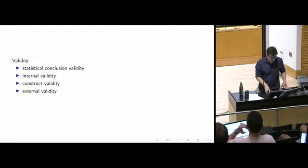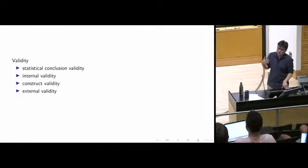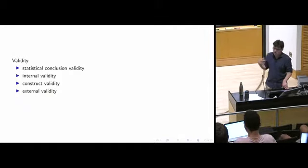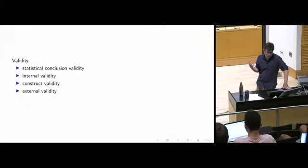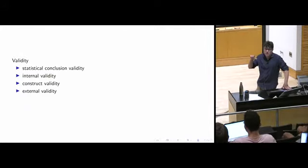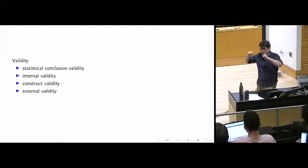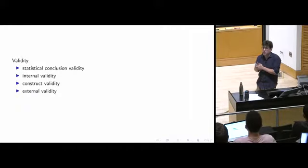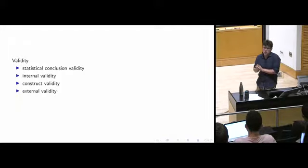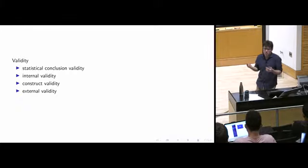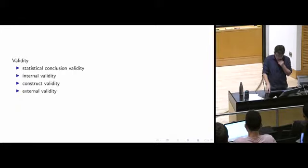Validity is a useful checklist for thinking about what a result is and communicating concerns as you design your own experiments. Statistical conclusion validity asks if you did your statistics correctly. Internal validity asks if the randomization worked correctly and whether the treatment was delivered correctly — these can be real problems in online experiments. If an experiment has 50 million people in it but the randomization was screwed up, or people in the control group got the treatment, it doesn't matter — it's a messed up experiment.